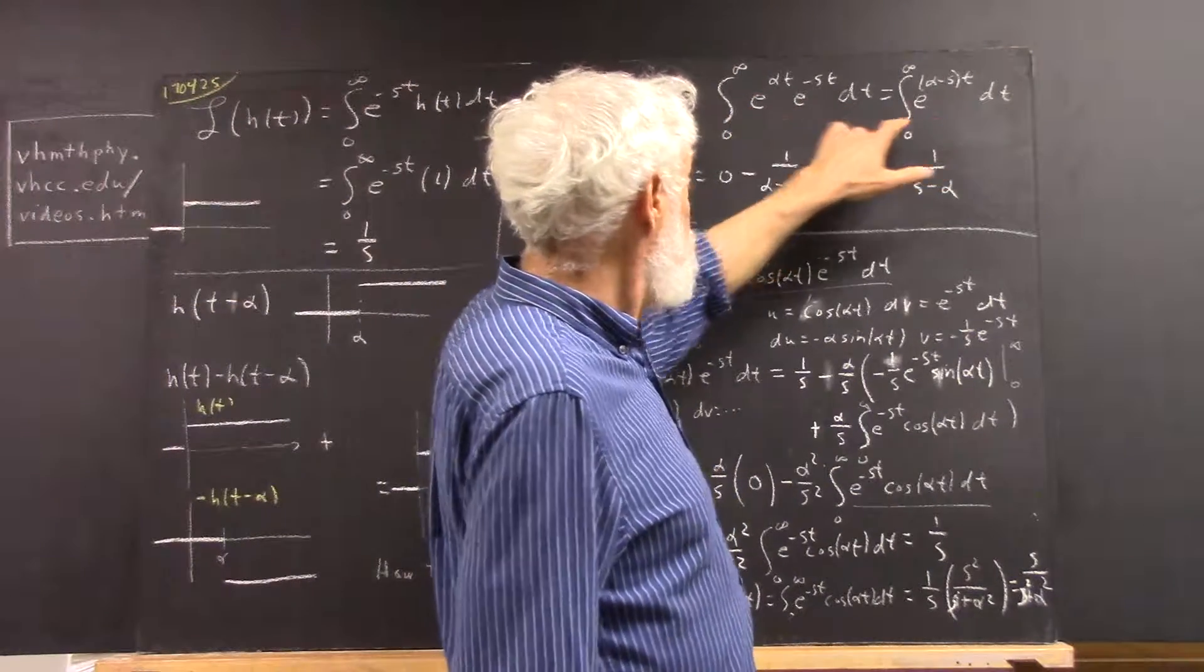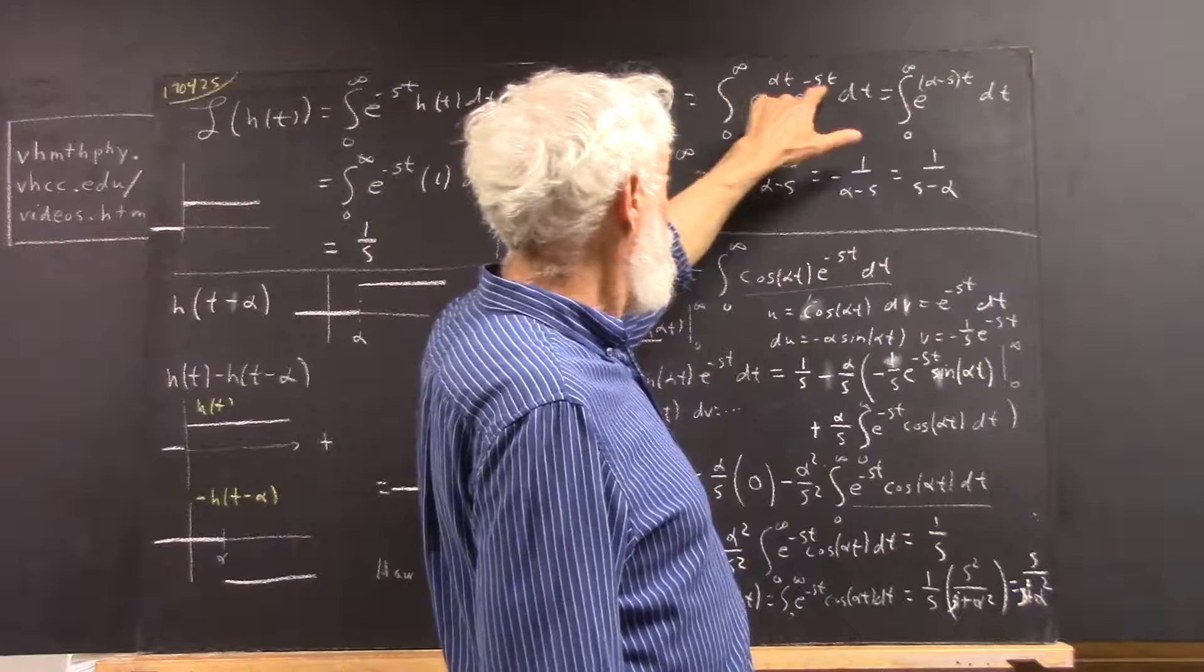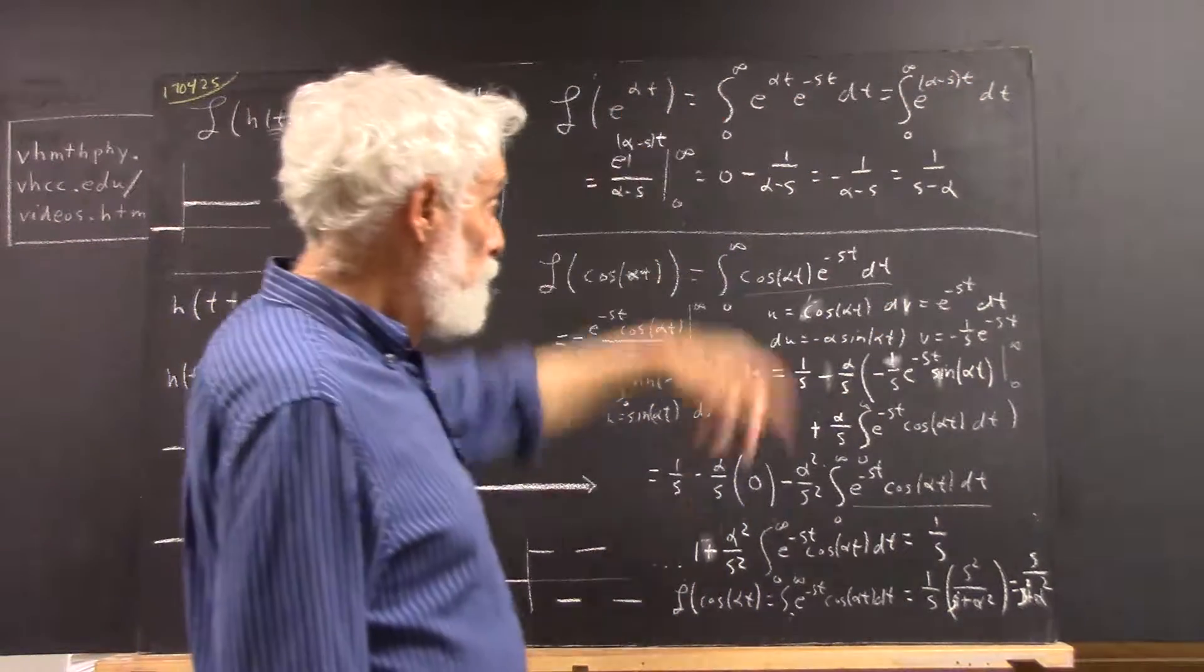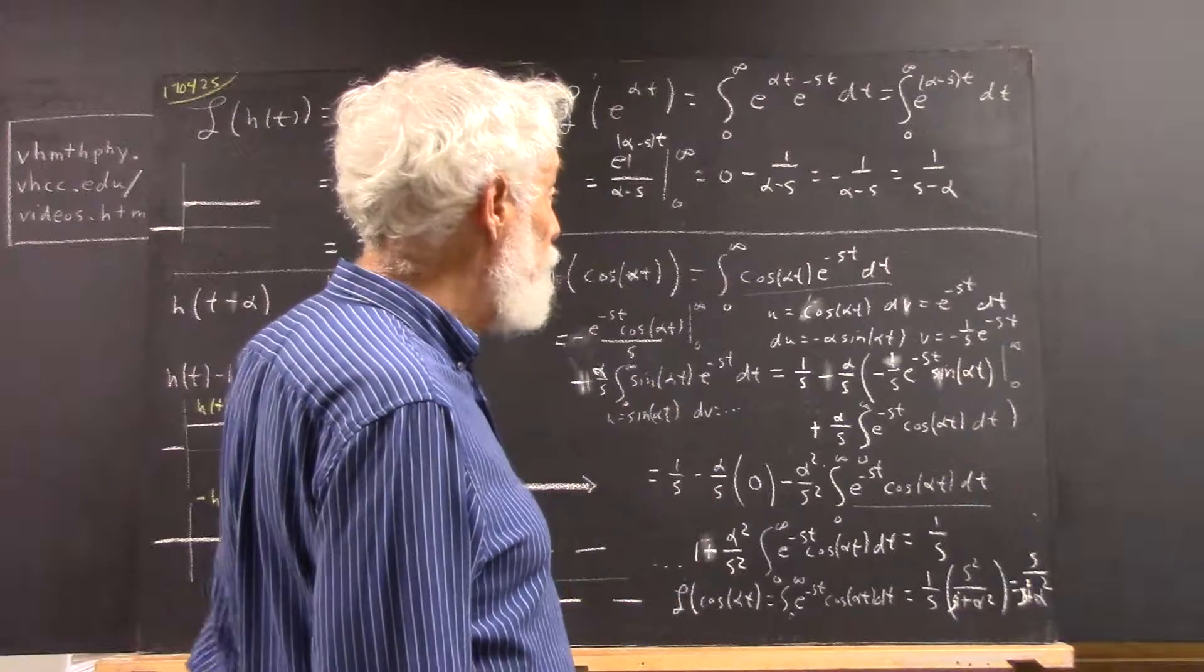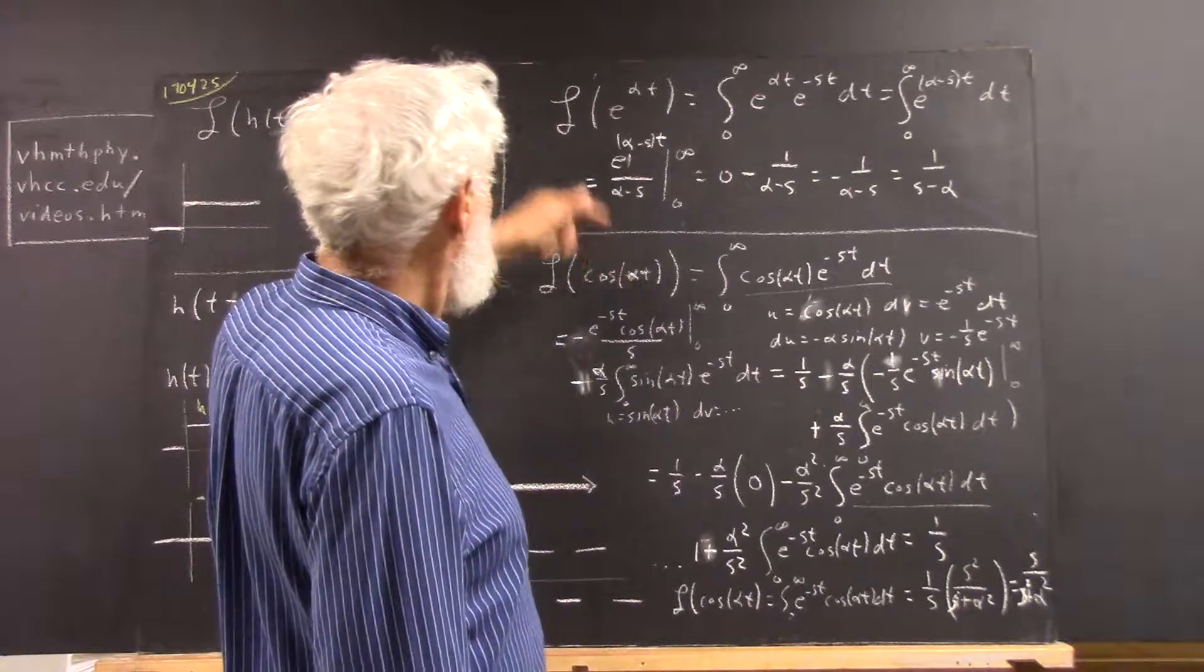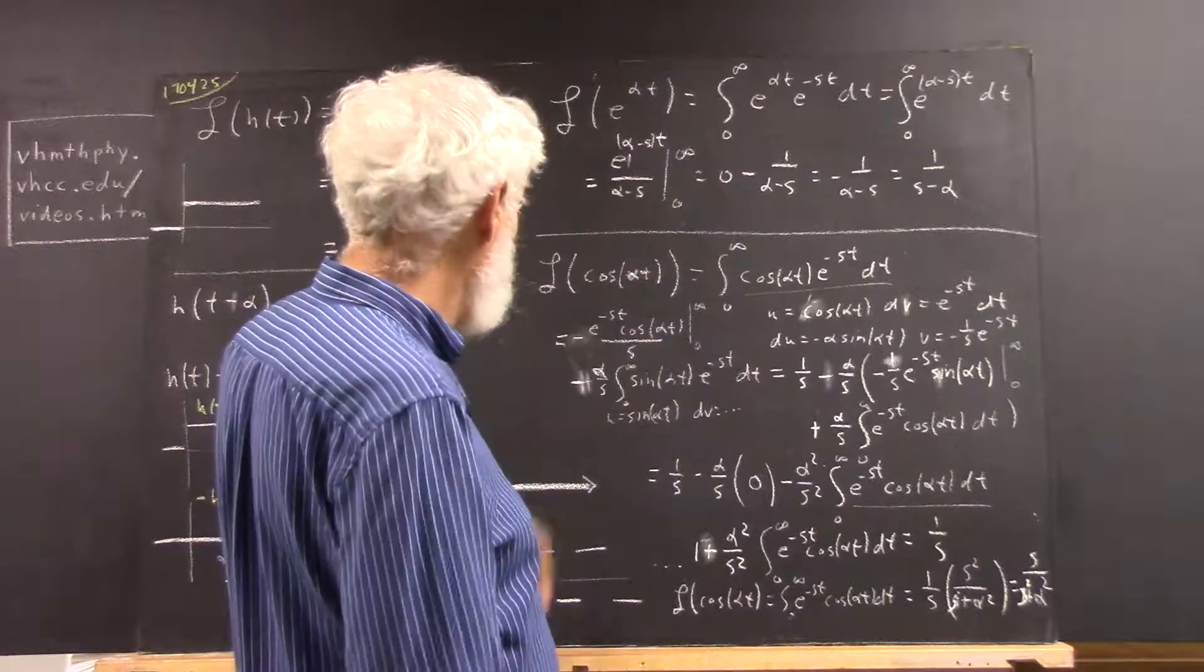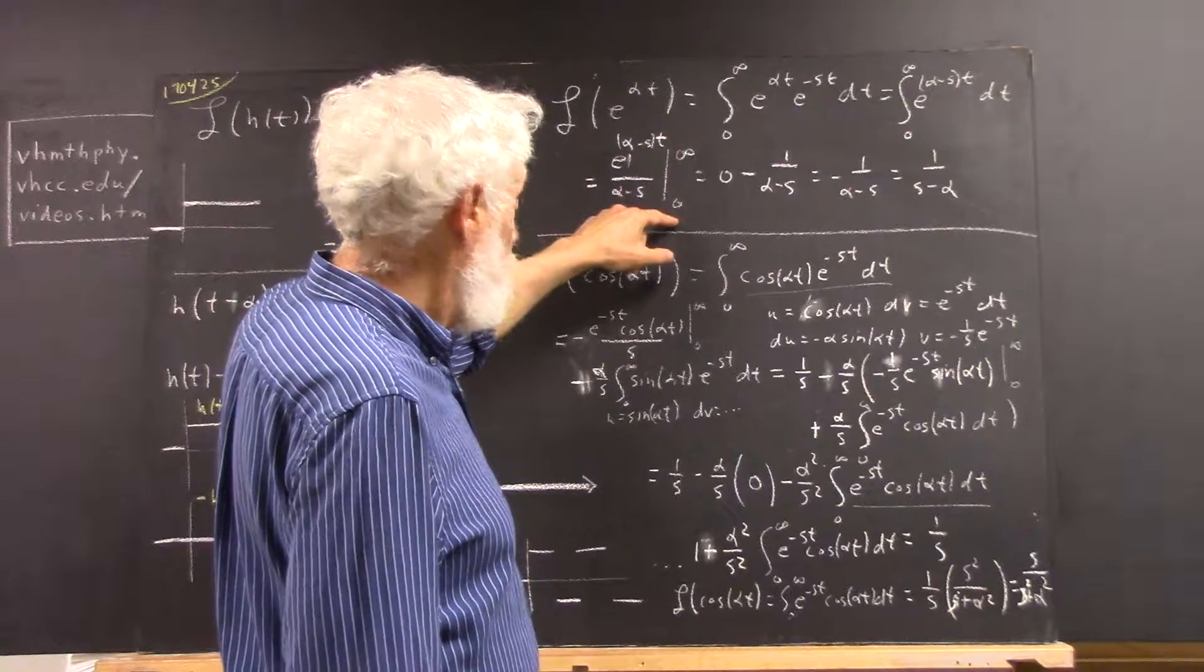And then laws of exponents tell us that that's just e to the alpha minus s times t. And the antiderivative of e to the alpha minus s times t is e to the alpha minus s times t divided by alpha minus s. Very straightforward. Evaluate it at infinity and zero.